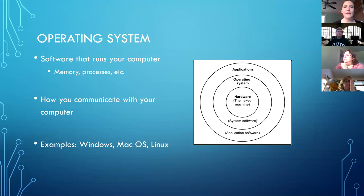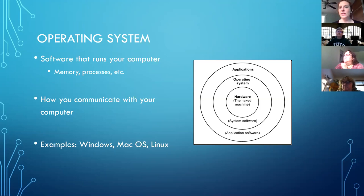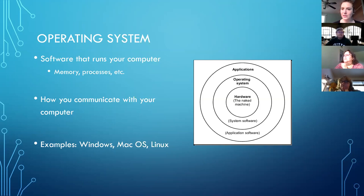You have an operating system on your computer. If you didn't, your computer would just be the tower or laptop with the screen. The operating system is what makes it run — it's how we communicate with the pieces of the computer and make it do what we want. From there, we add applications like Word, PowerPoint, and Gatekeeper — all the things we use on the computer to make it work.